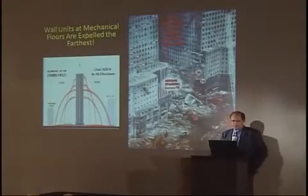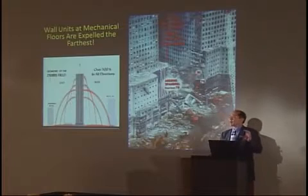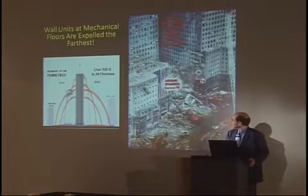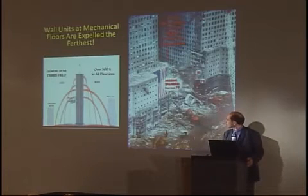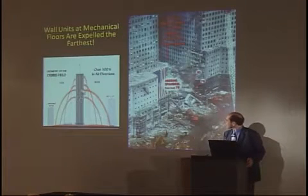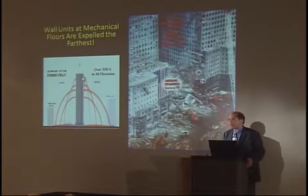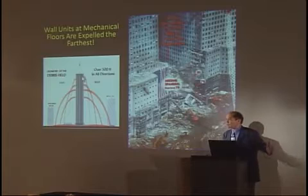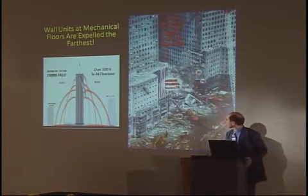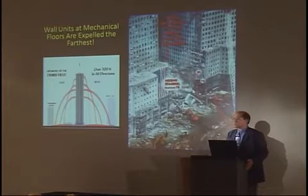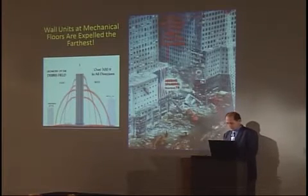What shot pieces of the towers all the way across the street? In fact, the portions of the tower that had the greatest structural members — the sky lobbies and the mechanical floors — had their perimeter units thrown farther than the perimeter wall units from the upper floors, which theoretically, because they're higher, should have gone farther. But no — these perimeter units landed on the Winter Garden, 600 feet away.